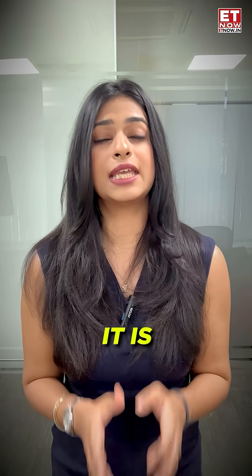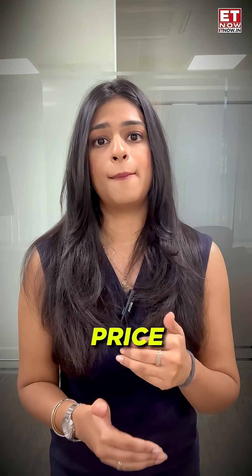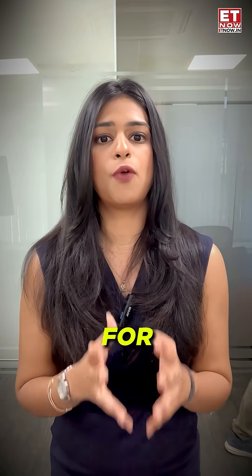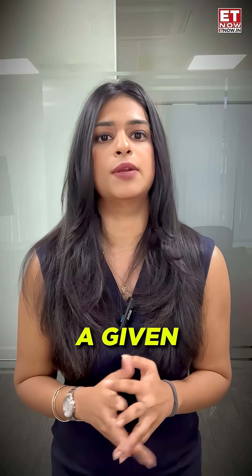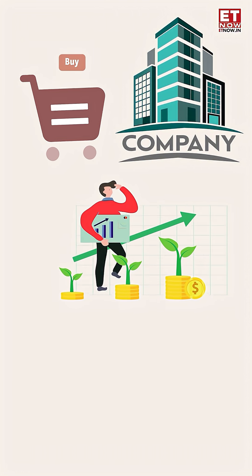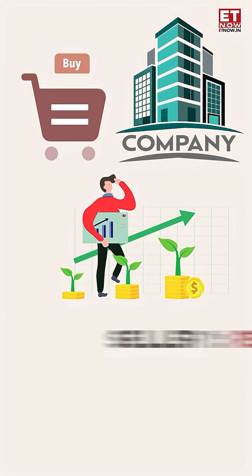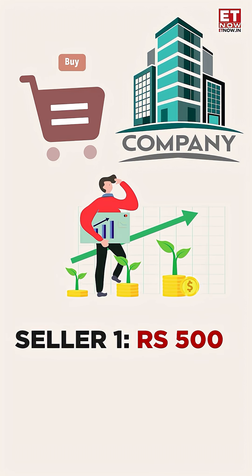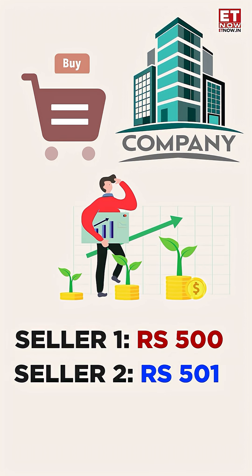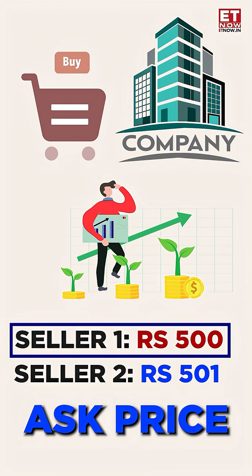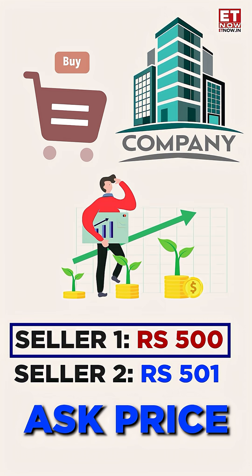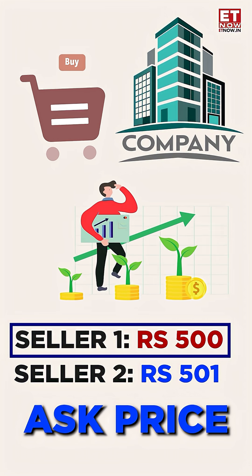Now, coming to the ask price — it is the lowest price that the seller is currently willing to accept for the security at a given moment. Say you want to buy shares of XYZ company. Sellers are asking for their price. One might say, 'I will sell it for 500 rupees,' and another might say, 'I will sell it for 501 rupees.' Then the ask price is the lowest — so the ask price will be 500 rupees, and that is the price you will buy the stock at.